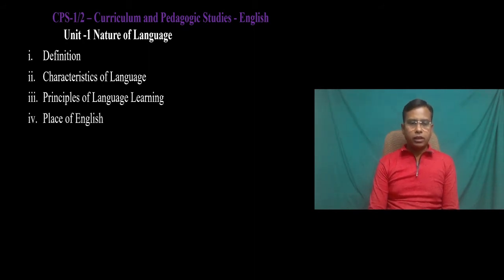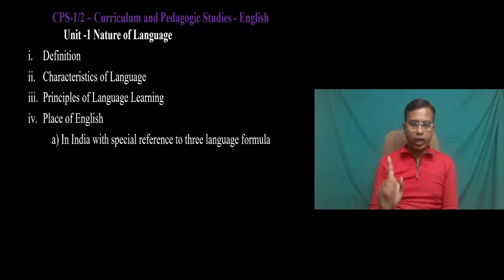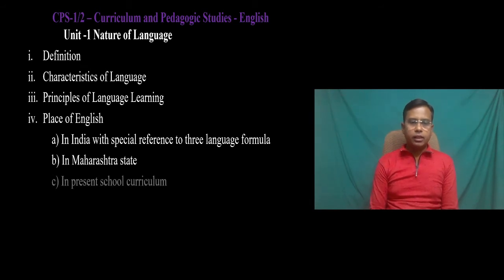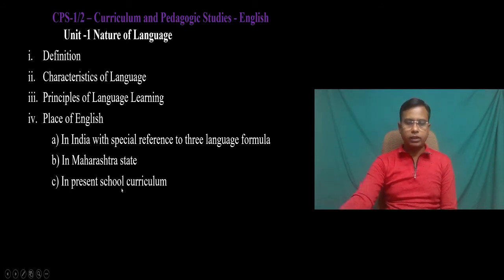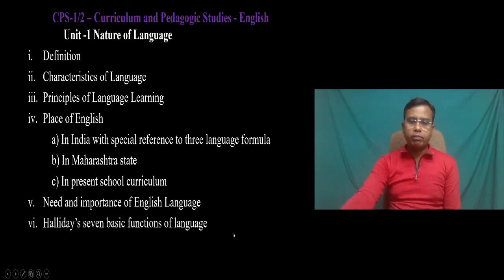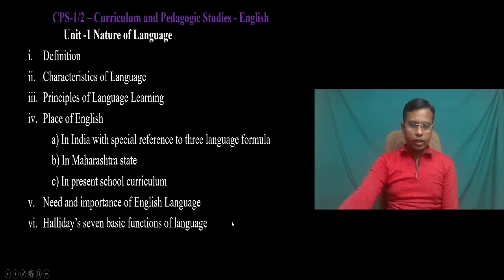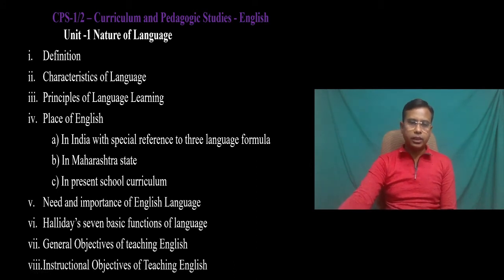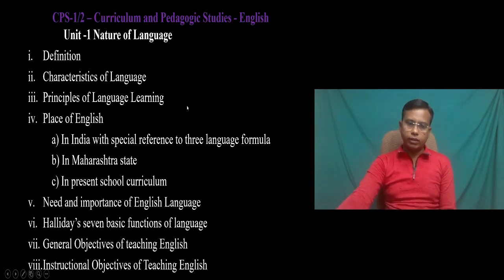Then the place of English — we have to study it according to three types: first, in India with special reference to the three language formula; then in Maharashtra state; and then in the present school curriculum. Then the need and importance of English language, Halliday's seven basic functions of language, general objectives of teaching English, and instructional objectives of teaching English. These are the sub-topics we are going to cover in Unit 1 — Nature of Language.